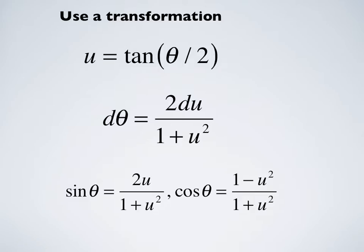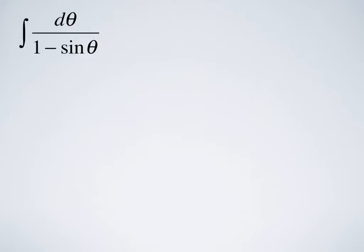The procedure is to transform your sines and cosines and the differential using these expressions, and then when you get your answer in terms of u, you invert, converting it to tan(θ/2). We'll start with a simple example: the integral of dθ over 1 minus sinθ.